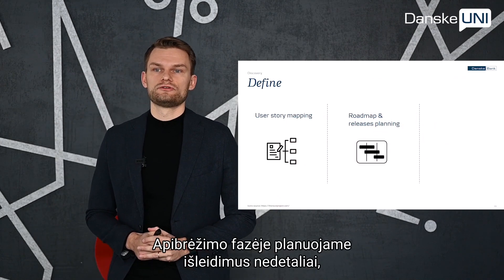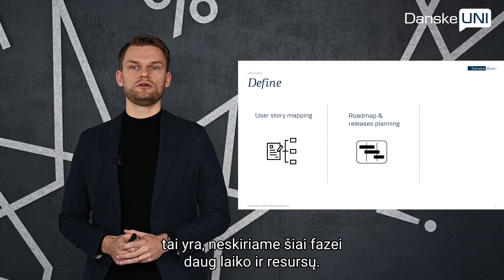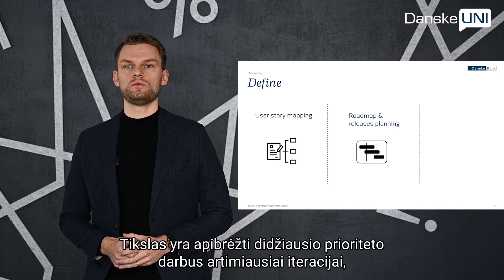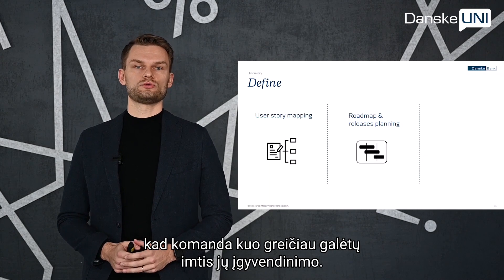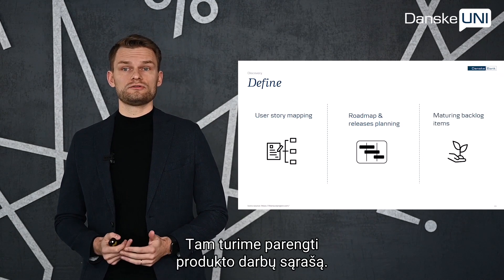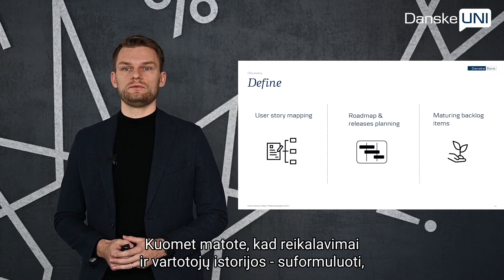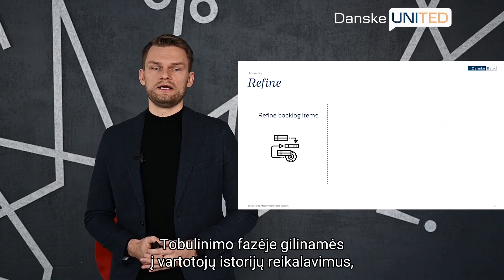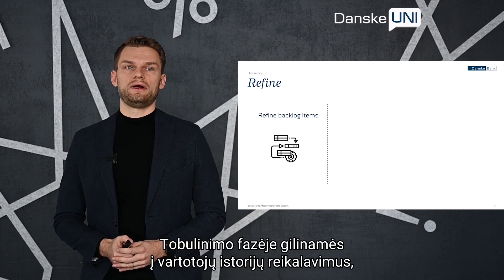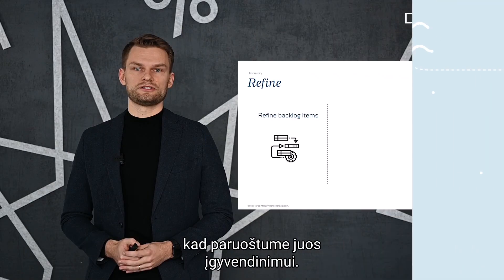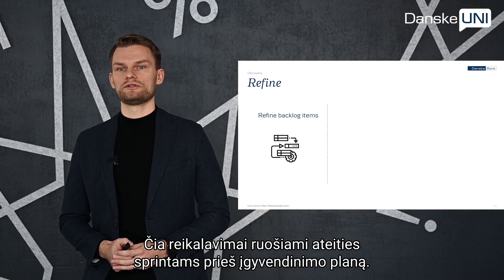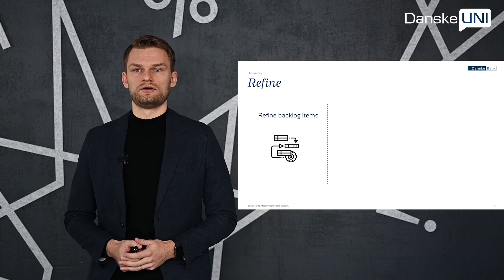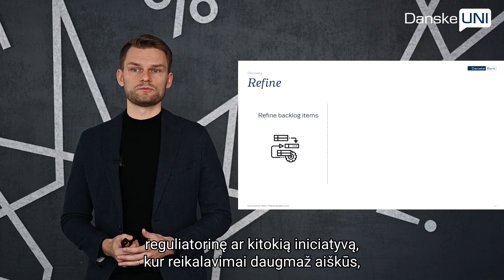During the define phase, we usually do roadmap and releases planning only on a high level, meaning we don't invest too much time and resources. Our goal is to define backlog items for the upcoming one or two iterations so that the team will be able to start development as soon as possible. In order to do so, we have to mature backlog items. When we feel that some user stories or tasks are quite matured, we have to refine them. In Scrum, we aim to prepare backlog items for the upcoming one to two sprints before iteration planning takes place.